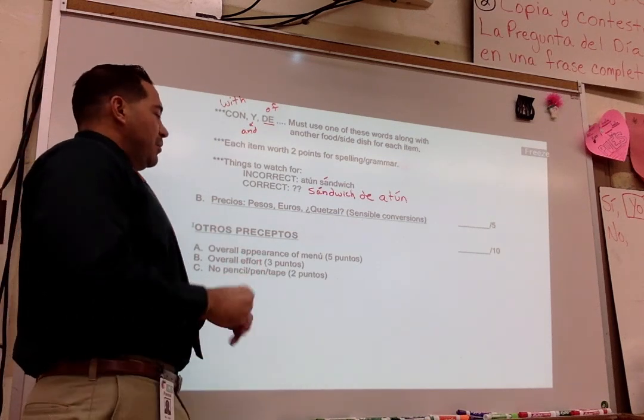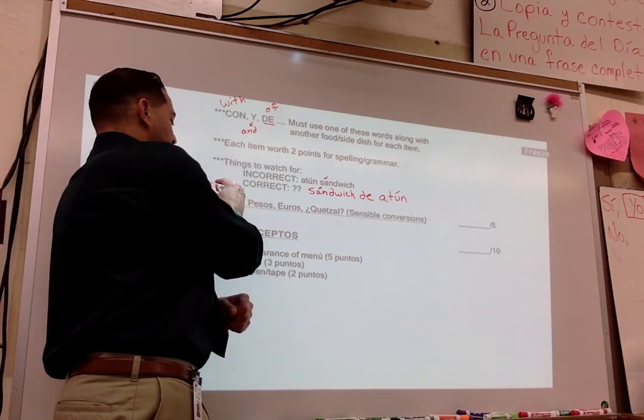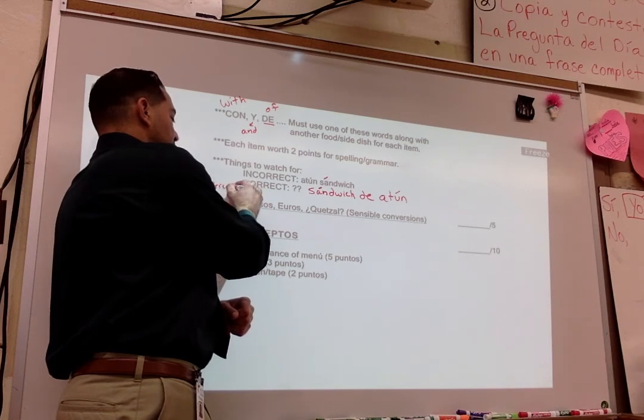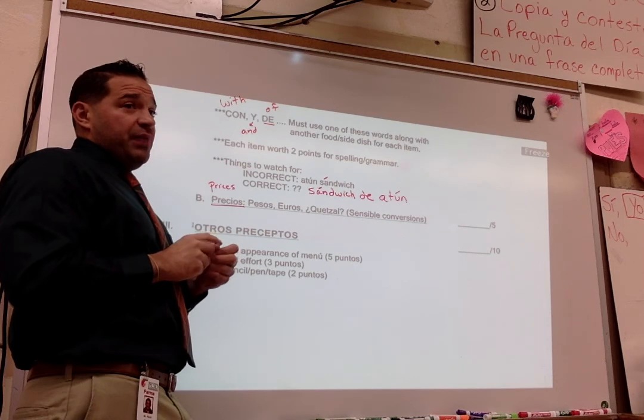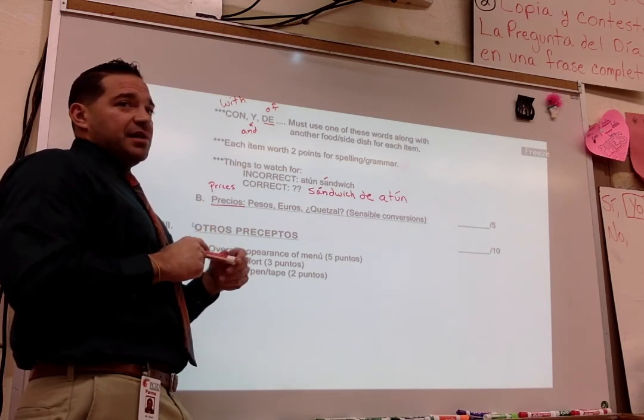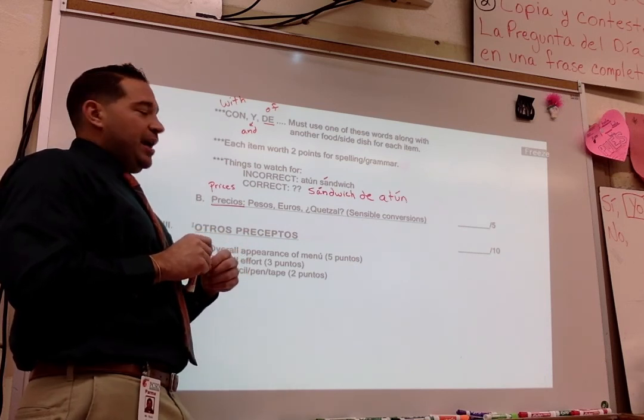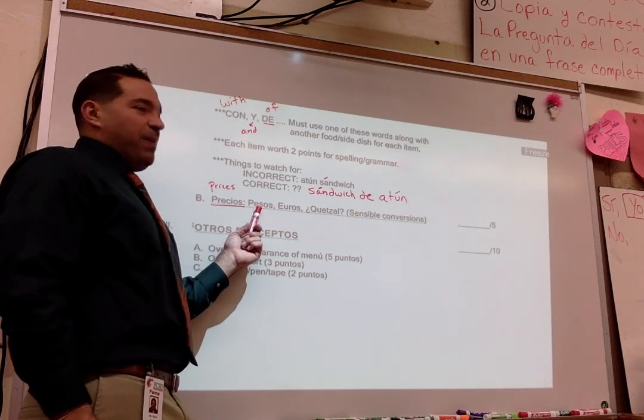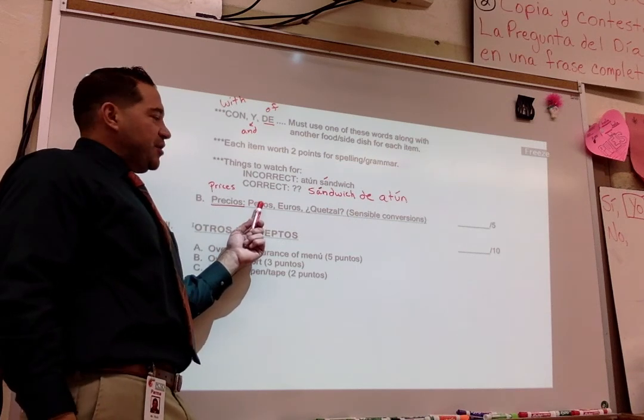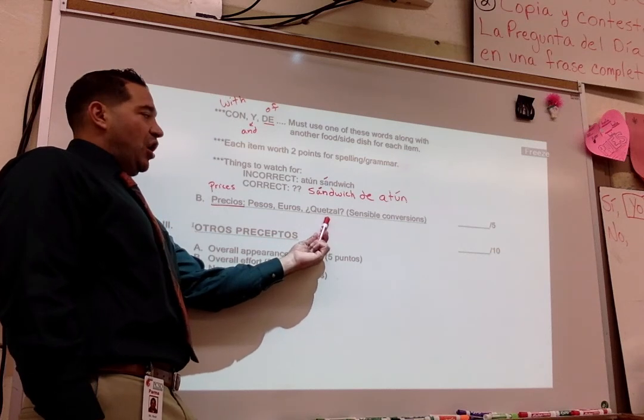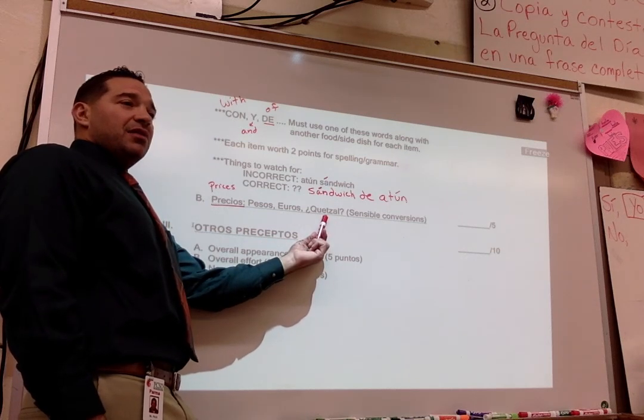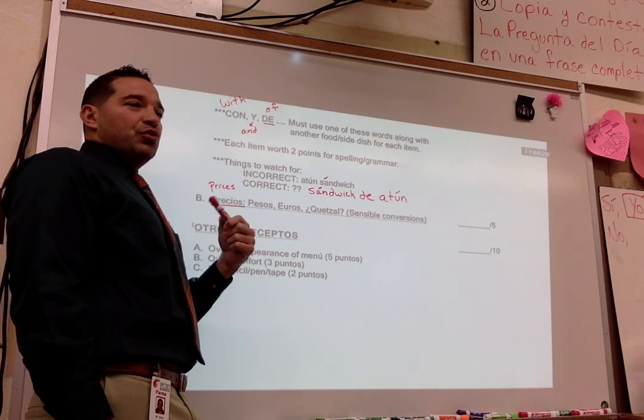All right. Now, this might take you a little while. Precios, prices. You have to research whatever country you're picking. What kind of money is it in that country? In Mexico, they use pesos. If it's something in Spain, they use euros. If it's Peru, they use what's called quetzal. That's the name of their money. So you have to do a little research on that.